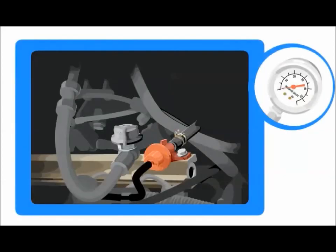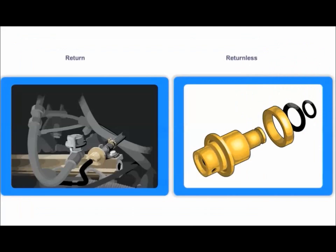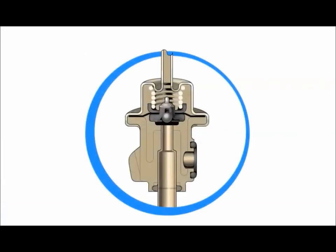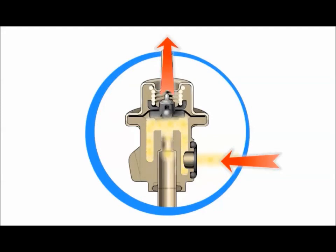The regulator's function is to keep the fuel at the specified pressure. There are slight differences between the return-type regulator and the returnless-type regulator. The regulator consists of a housing, valve, diaphragm, and spring. The spring holds the valve closed and allows fuel pressure to build up against the diaphragm. When the fuel pressure overcomes the spring pressure, the valve opens and allows excess fuel to bleed off and return to the fuel tank.